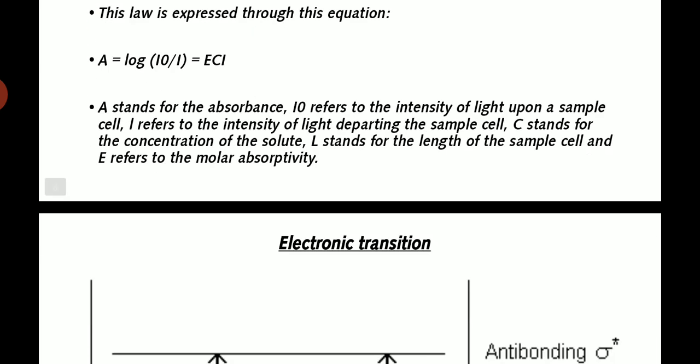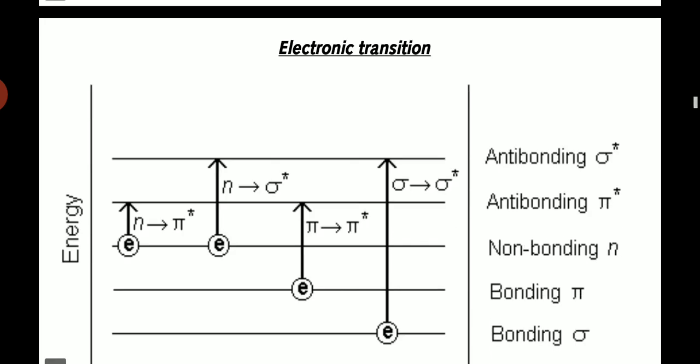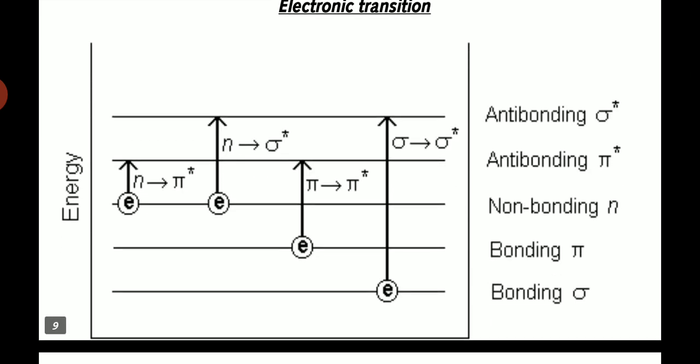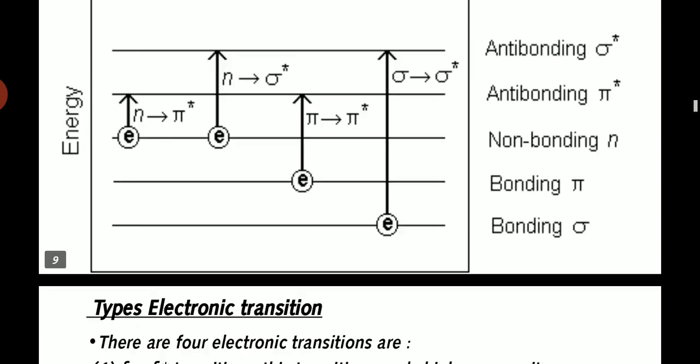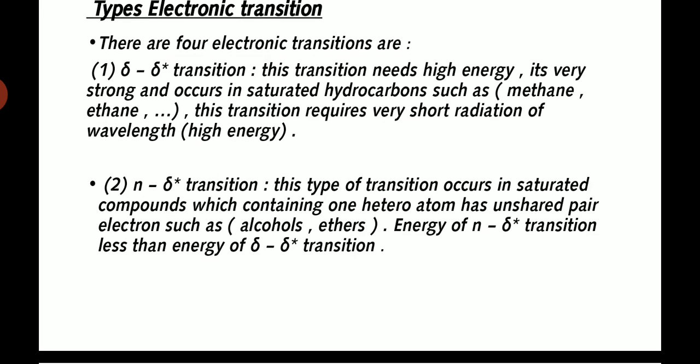Coming towards electronic transitions of UV visible spectroscopy. In this diagram you can see there is energy levels: anti-bonding, pi-electrons and sigma-electrons, non-bonding, and bonding. Due to upper and lower energy, this forms electronic transitions. Types of electronic transitions: there are four transitions. Sigma transition requires high energy, is very strong, and occurs in saturated hydrocarbons such as methane. The transition requires very short radiation wavelength and high energy.